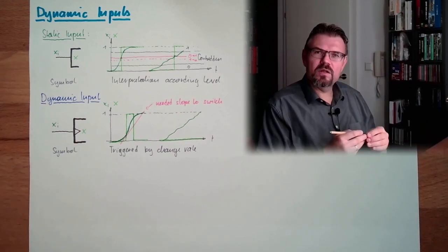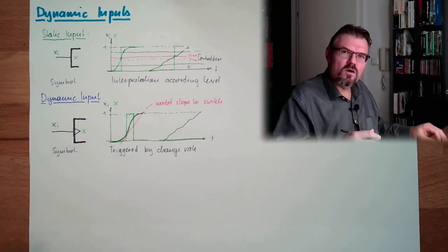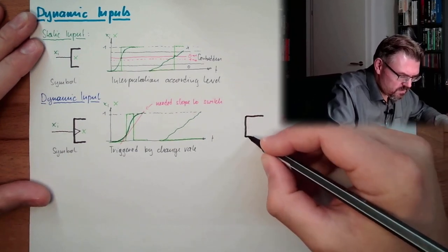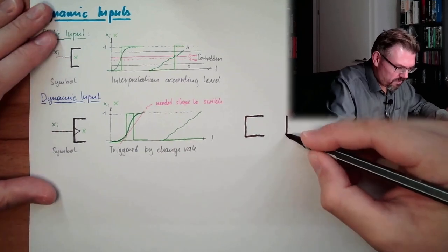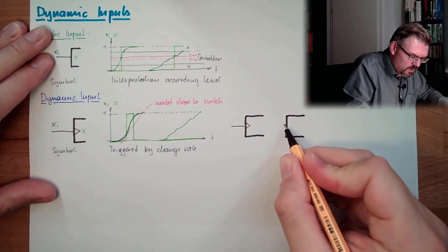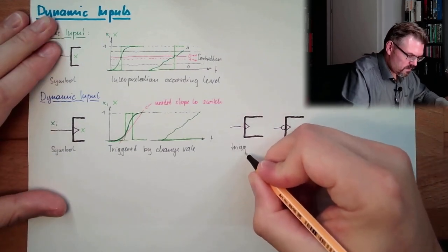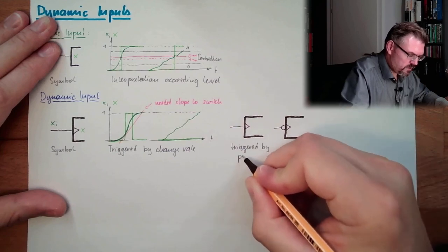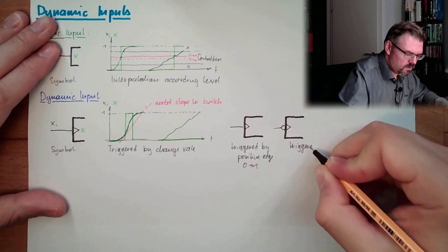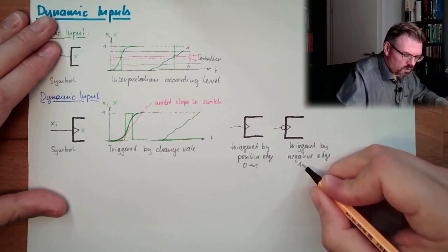In reality, it's just a short impulse whenever we switch from 0 to 1. There are also dynamic inputs which trigger when we switch from 1 to 0. And their symbol is like that. I will draw them next to each other. Dynamic input. And here we have a node. This is triggered by positive edge. So from 0 to 1. And this is triggered by negative edge. From 1 to 0.